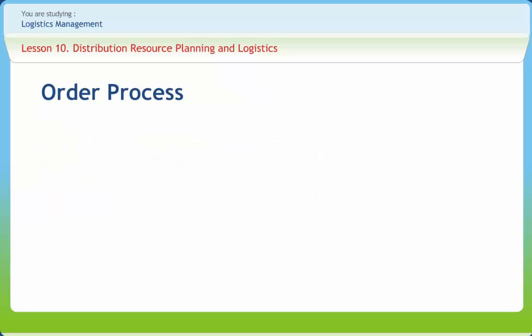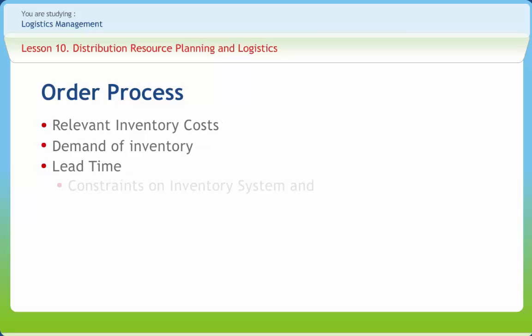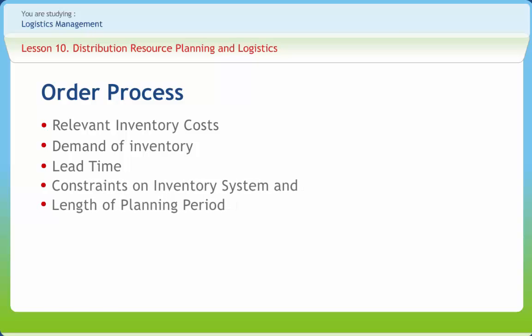Order processing takes place after an order has been submitted by a buyer. The process of submitting an order takes place in real-time while the buyer waits. The longer it takes, the lower will be the customer satisfaction. The main factors determining the length of this time are relevant inventory costs, demand of inventory, lead time, constraints on the inventory system, and the length of the planning period.